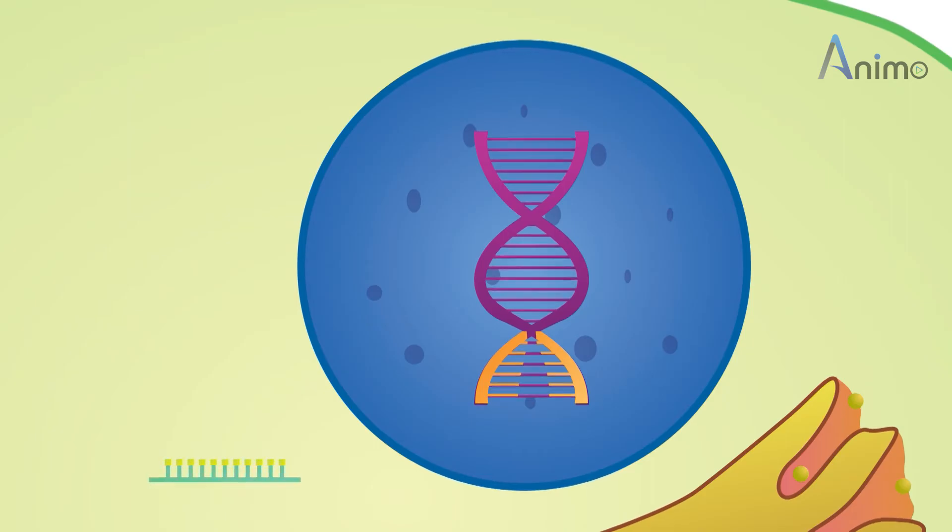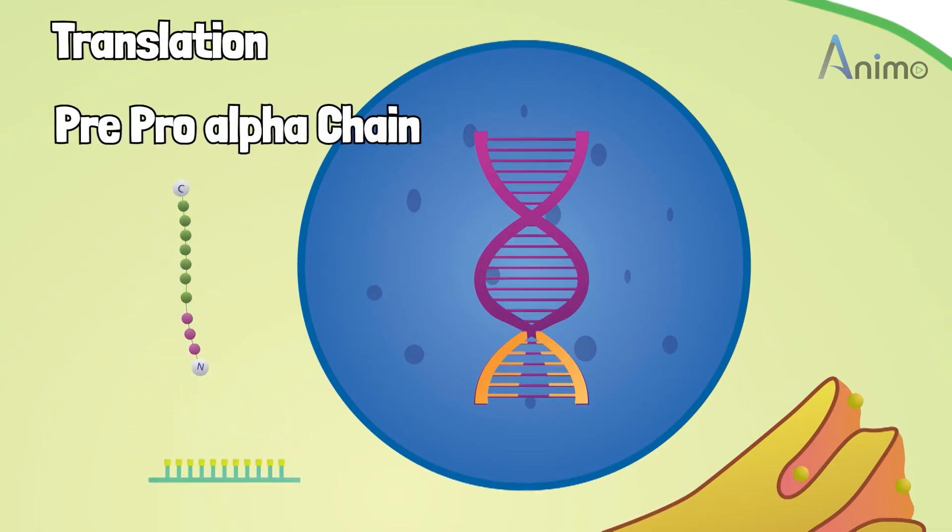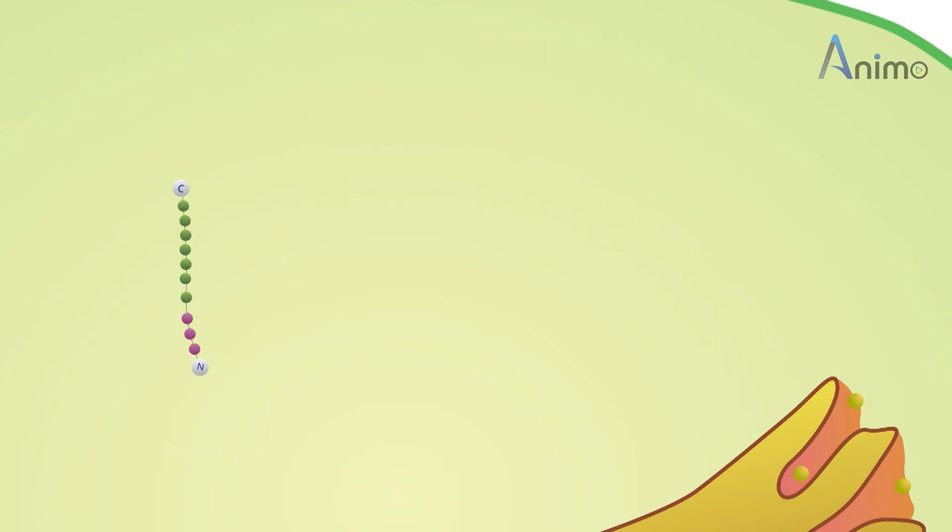The mRNA is taken up by its partner, ribosomes. These ribosomes are attached to the rough endoplasmic reticulum, and here it undergoes translation and produces a polypeptide known as pre-pro-alpha chain.